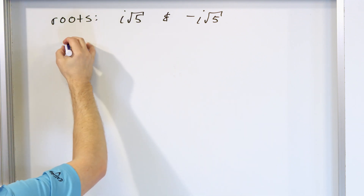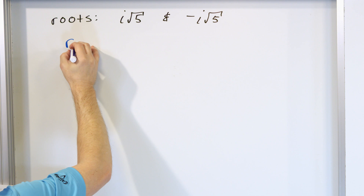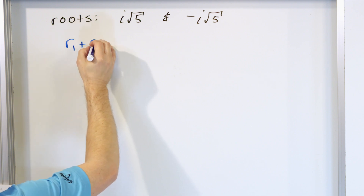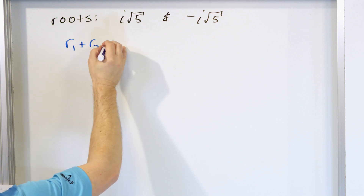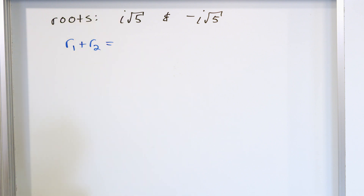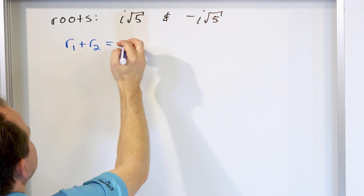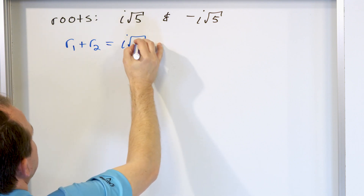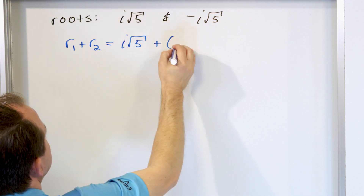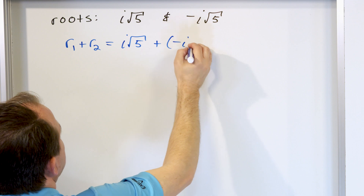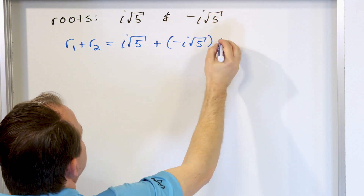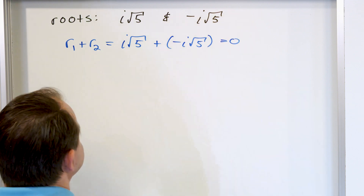From the theorem we've already learned, you need to find two things: the sum of these roots and the product of those roots. For the sum, it's i times the square root of 5 plus negative i times the square root of 5, and you can see right away that that's just zero.